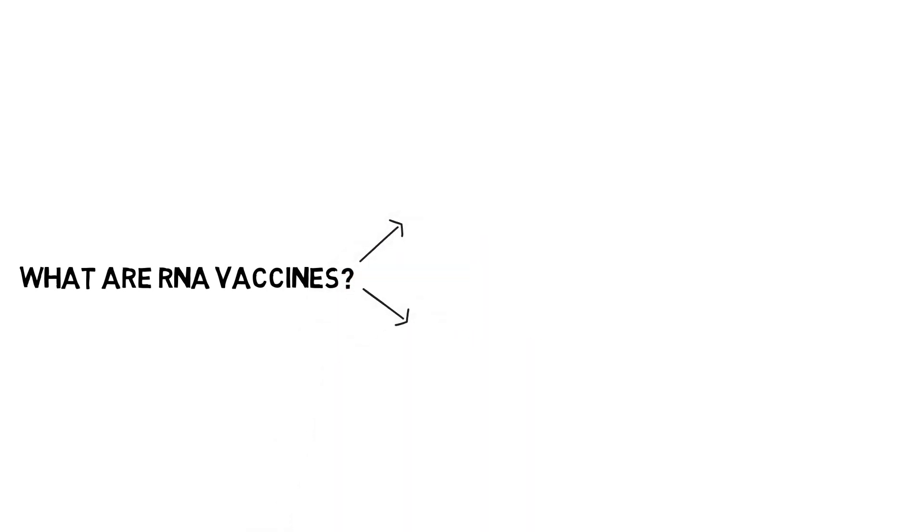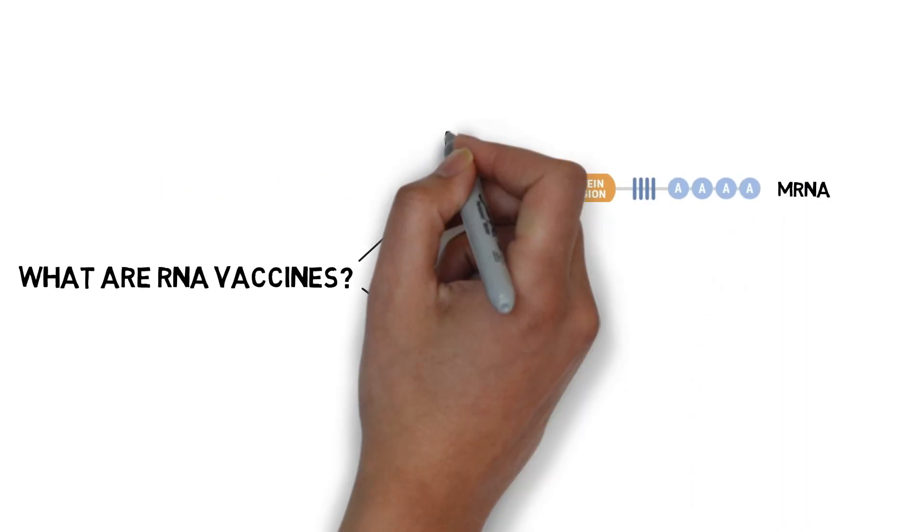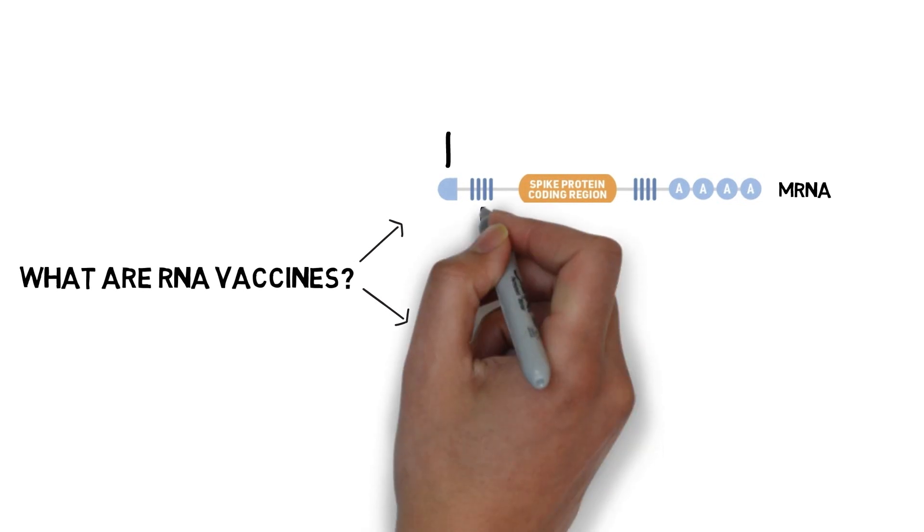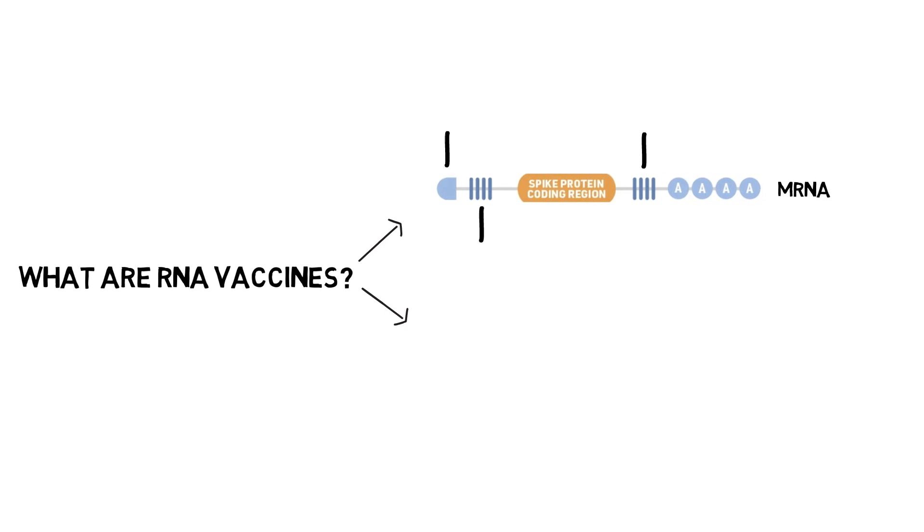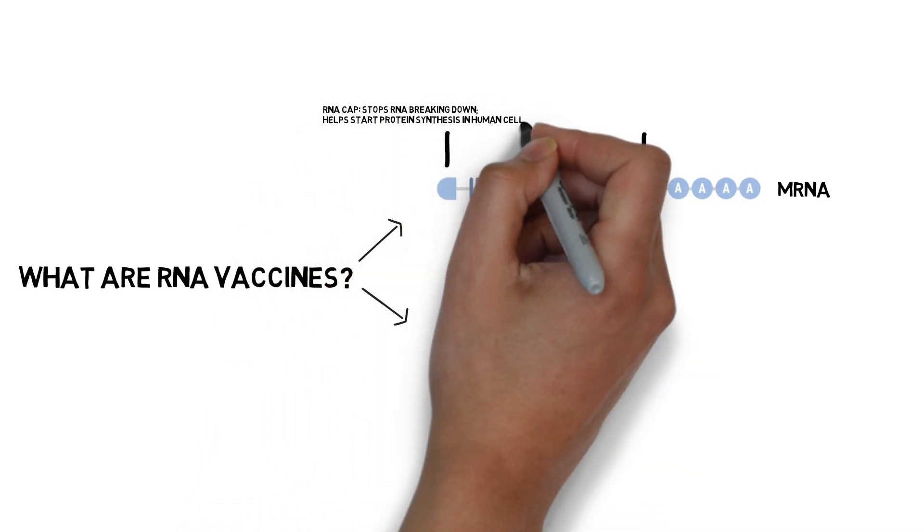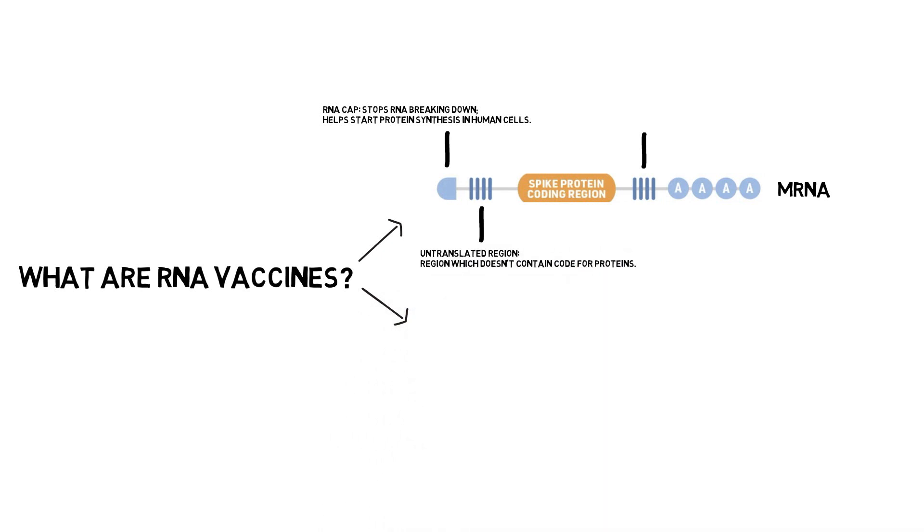They can be based on two different types of RNA. We have the mRNA vaccines created by Moderna, Pfizer-BioNTech and CureVac and the S-A RNA vaccines created by Imperial College and Arcturus. The structures of messenger RNA and self-amplifying RNA are similar, but have a key difference.